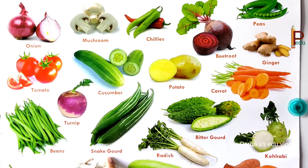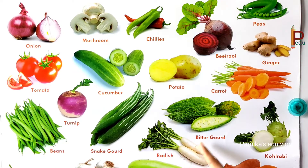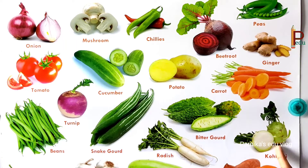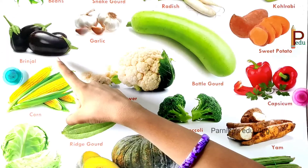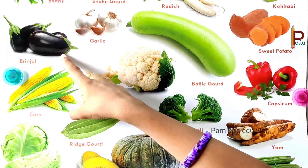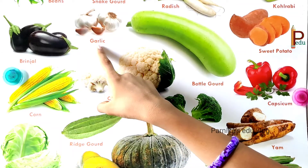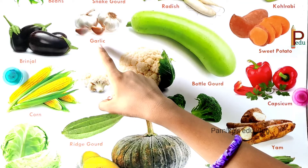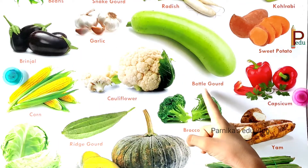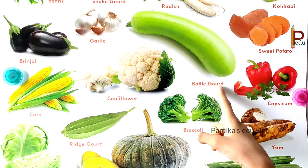These are snake gourds. These are radish. These are bitter gourds. This is kohlrabi. These are brinjals. This is garlic. This is bottle gourd.